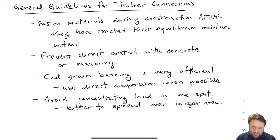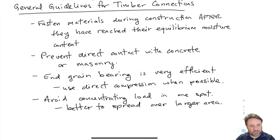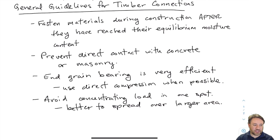We should prevent timber from being in direct contact with concrete or masonry. Concrete and masonry are very attractive to water, and through capillary action, moisture can move through them easily. If we put timber in direct contact, that moisture — which doesn't affect the strength of the concrete — could seep into the timber, reduce its strength, and if present for a long time, cause rot.